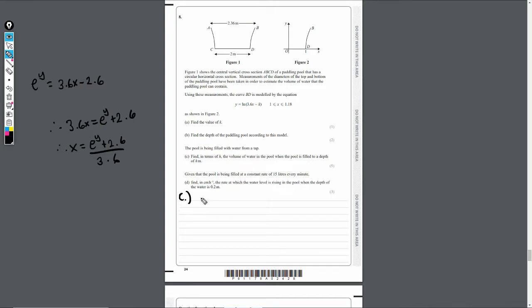So my formula now will be V equals, so we're going to use your formula. It'll be π times the integral. We won't put any limits on just yet, we'll come back to that when we're about to perform the integration. And then it's going to be my x squared, where this is x. So it's going to be (e^y + 2.6) / 3.6 all squared with respect to y now.